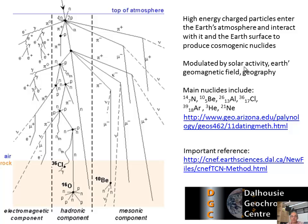The main isotopes, or nuclides, we work with are beryllium-10, aluminum-26, and chlorine-36. And noble gases — helium-3 and neon-21 — are being used more, with some centers really focused on this methodology.